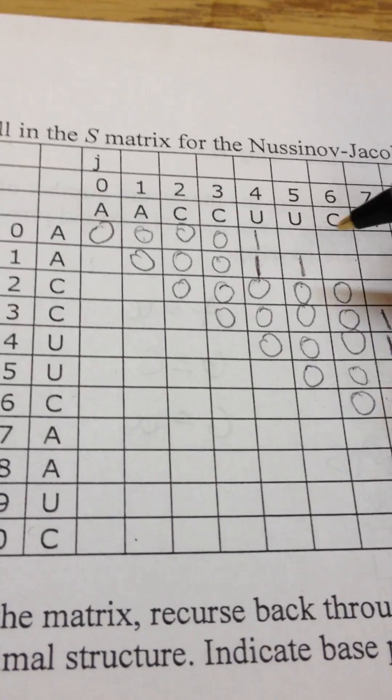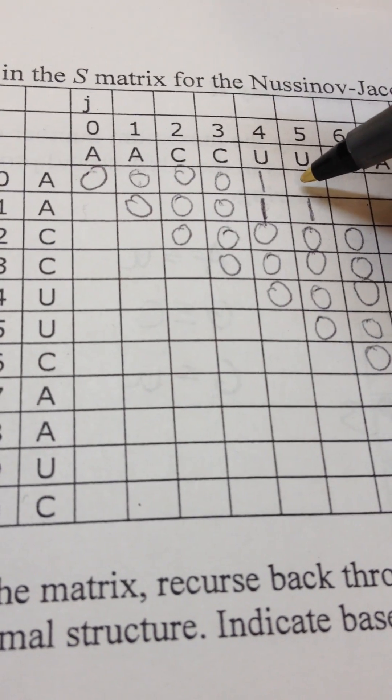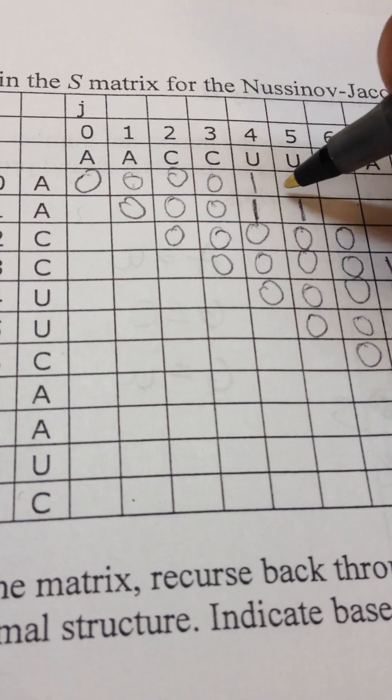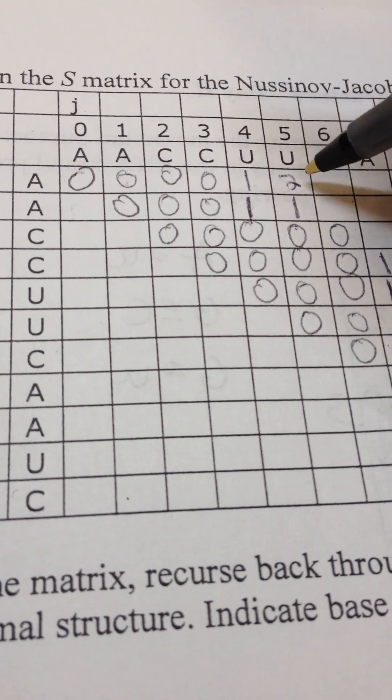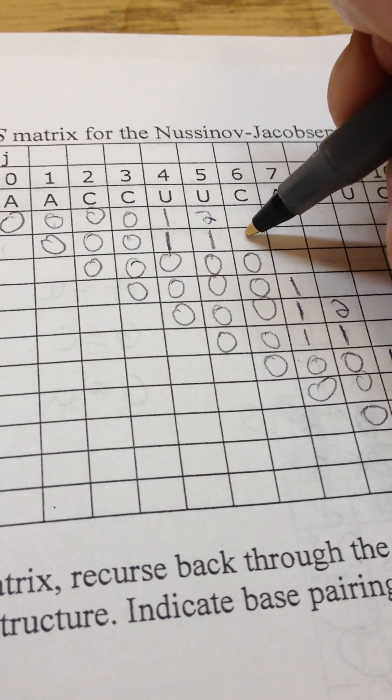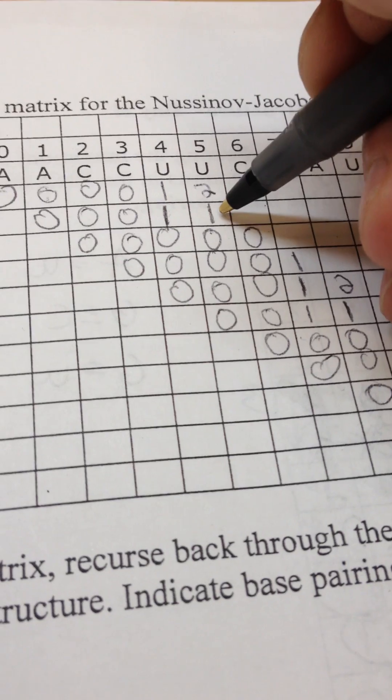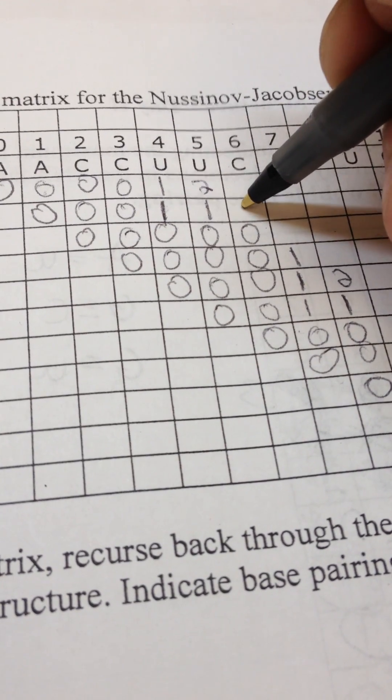And we continue down, and we'll start up top here. We have A to U that does match, and we look down into the left. So we add one to this number, that's two. As we continue, C to A does not match, so we look down to the left. No, but we can take this number from the left. So we make that a one.